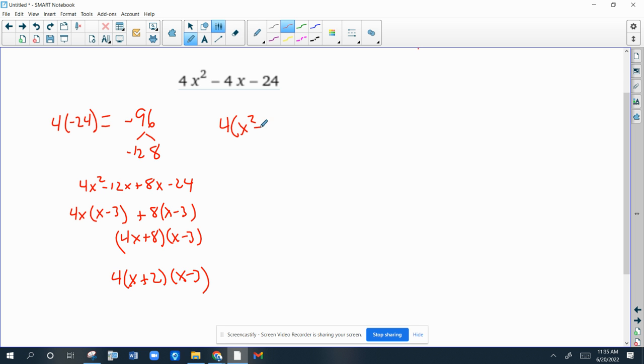If you factor out a 4 first, then you have this quadratic. And all you're doing is now a is 1. So, you have to find factors of negative 6 that add up to negative 1. And that's negative 3 and positive 2. So, that's much easier.